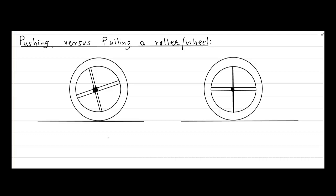So let's say we have a wheel with mass M. Therefore the downward force that will come into play is Mg, acting in the downward direction. Let's say this roller is being moved in the clockwise direction and for that we are applying a push force on the axle of the wheel.